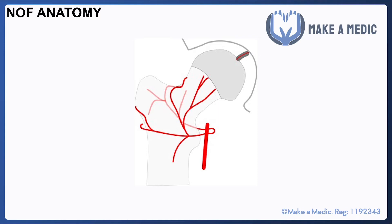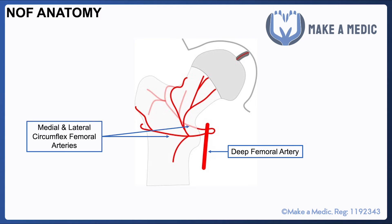Here we have the deep femoral artery, which is the main branch of the femoral artery, and it gives rise to two branches which wrap around the femur — the medial and lateral circumflex femoral arteries. These then give rise to retinacular arteries which progress superiorly up towards the head of the femur.